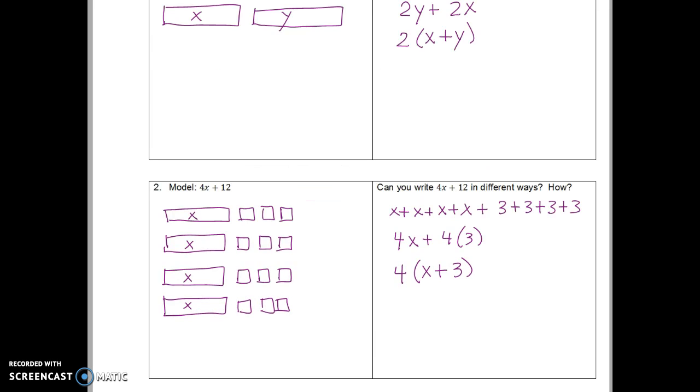Okay, so you can see here what I did with number 2. And again, I'm trying to make the model the most square. So if I were to draw a perimeter around my model, it would be pretty close to a square. Lots of different ways to write 4x plus 12.